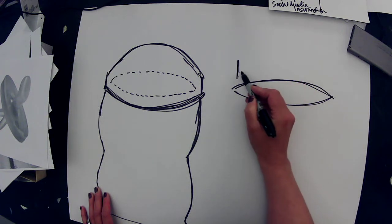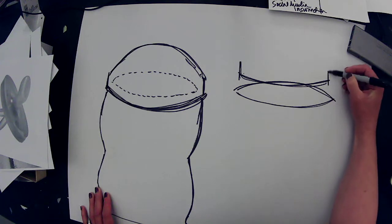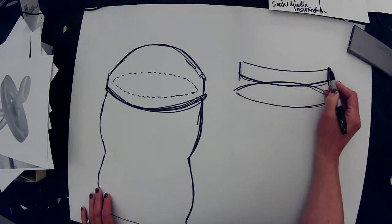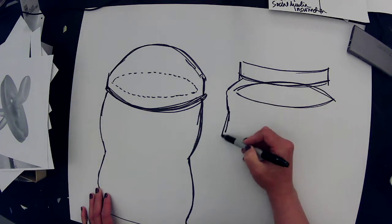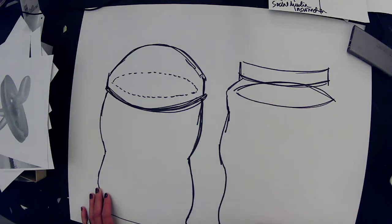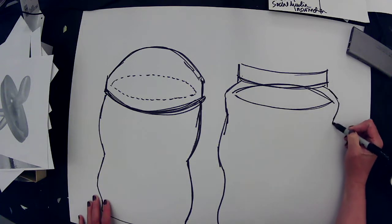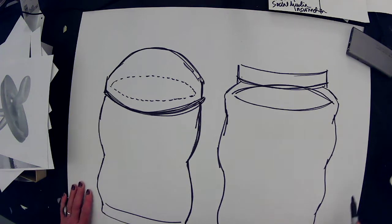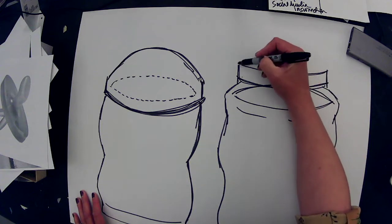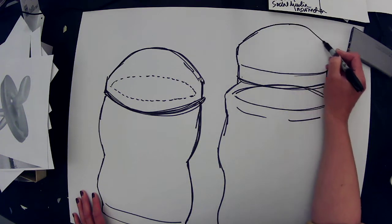The lid is going to have something called a flange on it. The flange is that internal lip that slides into the opening of your vessel so that the lid doesn't slide off, it remains intact.